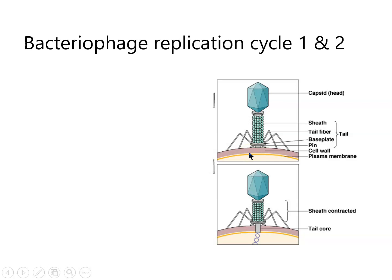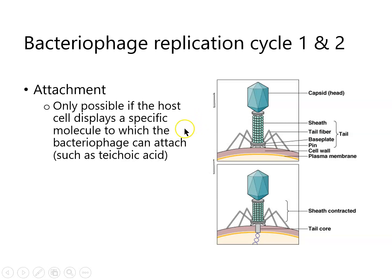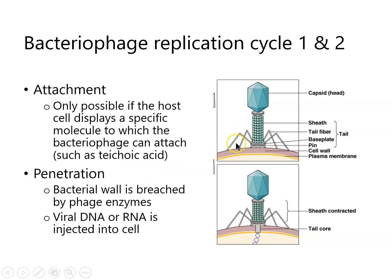Attachment is very specific. This is where we think about what receptors the virus is looking for on the host cell. Back to COVID, we talk about the ACE2 receptor and cells that display it — that is what matters for attachment. One of the variants that spreads faster attaches more strongly to that same receptor. This is the specific step that can determine a virus's tissue tropism, though for bacteriophage, since bacteria don't have tissues, it really just determines host range.